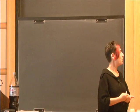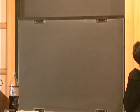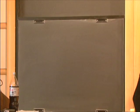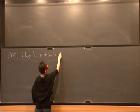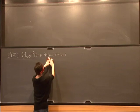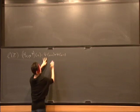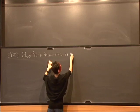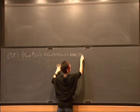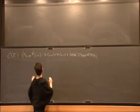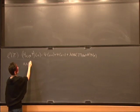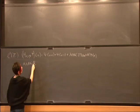This is a bounded self-adjoint operator defined on L² of Z by H acting on a sequence in L² of Z as ψ_n+1 plus ψ_n-1, which is exactly the discrete free Laplacian, plus the potential λ cos(2π αn + θ) ψ_n, where α, λ, and θ are some real numbers.